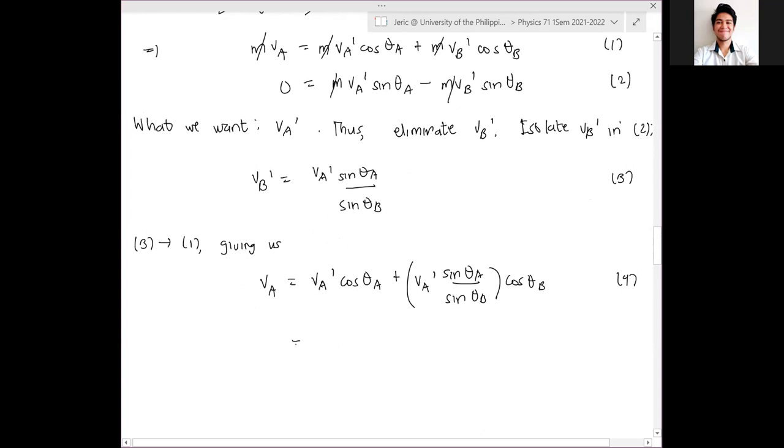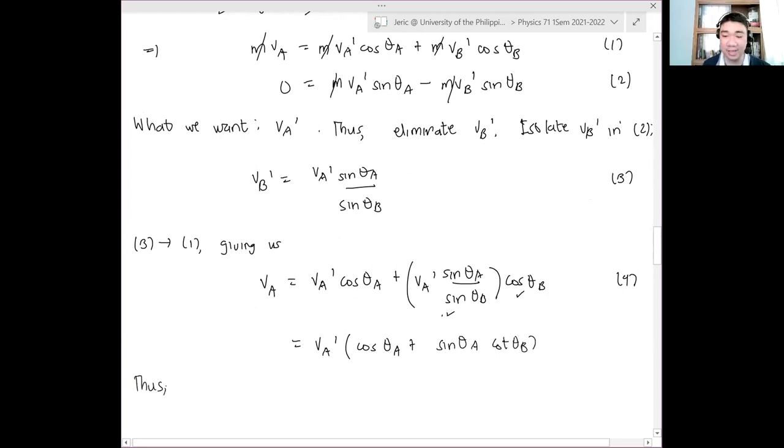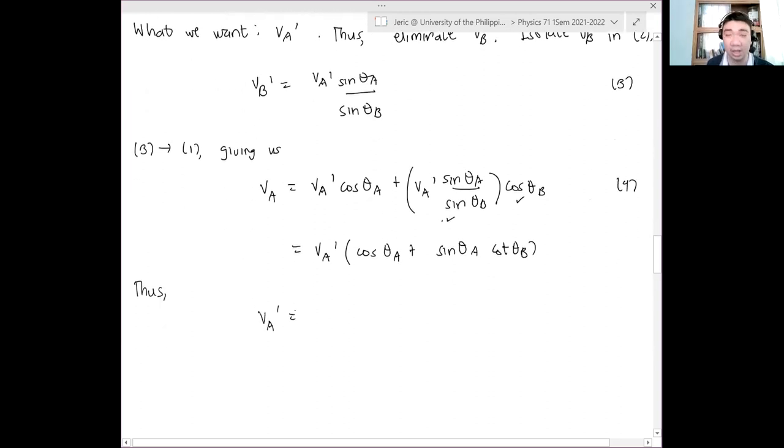I can factor out all my V_A prime. I simplify this because cosine over sine is cotangent. Therefore, I get V_A prime quantity cosine θ_A plus sine θ_A cotangent θ_B. Thus, the final velocity of puck A after the collision is simply V_A all over cosine θ_A plus sine θ_A cotangent θ_B. When you plug in the numbers, this is about equal to 1.09 meters per second. This is the final answer that we want.